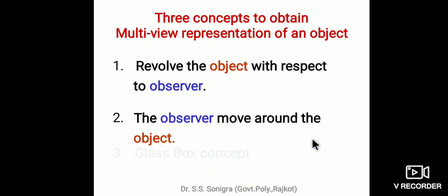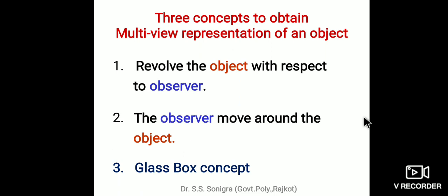There are three concepts to obtain multi-view representation of an object. You can use either of these: first, revolve the object with respect to the observer; second, the observer moves around the object; and third, the glass box theory.